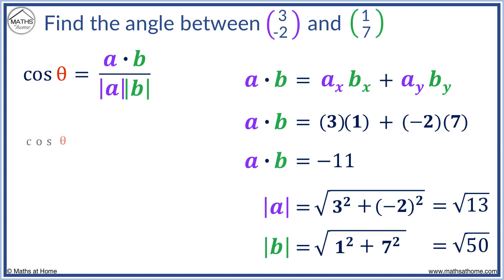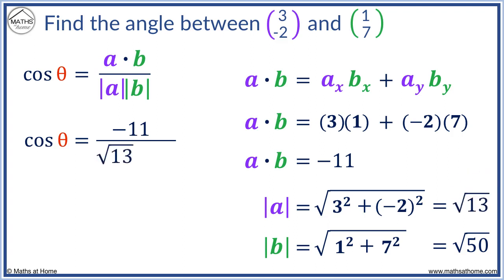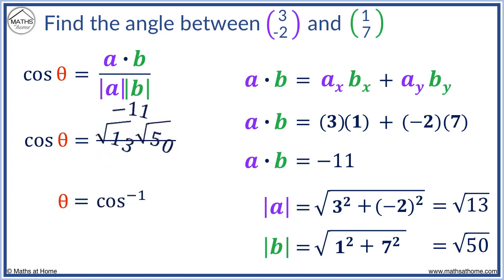We can now put these values into our formula. a dot b equals minus eleven, the magnitude of a equals the square root of thirteen, and the magnitude of b equals the square root of fifty. This is equal to cos theta, and we want theta. To remove cos and leave theta, we need to use inverse cos on our value above.